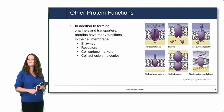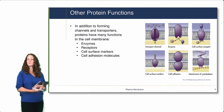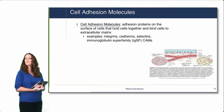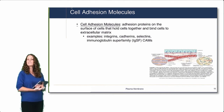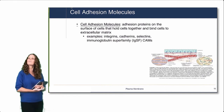In addition to forming channels and transporters, proteins have many other functions in the cell membrane. Proteins can be enzymes, receptors, cell surface markers, and cell adhesion molecules. Cell adhesion molecules are adhesion proteins on the surface of cells that hold cells together and bind cells to the extracellular matrix. Examples shown in your textbook include integrins, caderins, and selectins — you don't need to know the names of these, but you may hear them later.